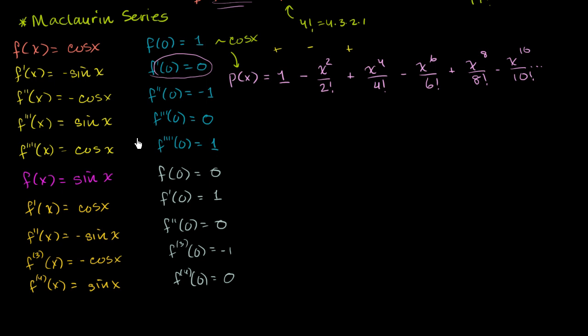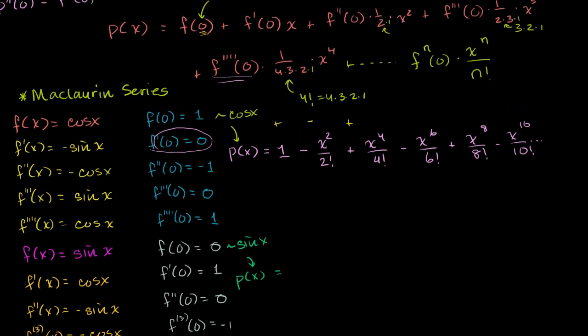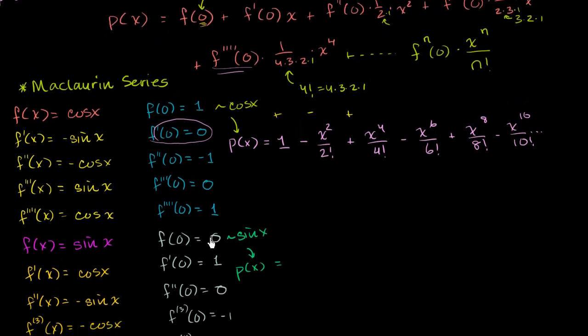So I'll pick a new color. This green should be nice. So this is our new p of x. So this is approximately going to be sine of x as we add more and more terms. And so the first term here, f of 0, that's just going to be 0. So we're not even going to need to include that. The next term is going to be f prime of 0, which is 1, times x. So it's going to be x.